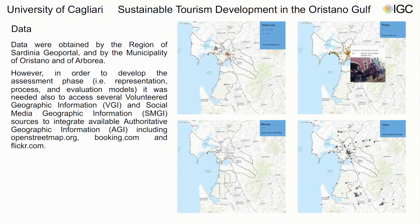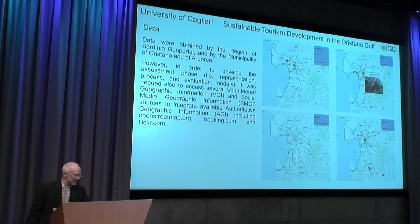One last concluding note: since this is based on a real-world case study, data availability was an issue. When working with real stakeholders, we cannot accept as many assumptions as we can with students or research. We had a lot of data from the regional government's spatial data infrastructure, but it was not enough. We heavily relied on volunteered geographic information and OpenStreetMap, and also on social media geographic information. We used booking data — from Booking.com we found 170 accommodation infrastructure entries, while the official dataset had only 40. We also used Flickr data to understand where tourists go.